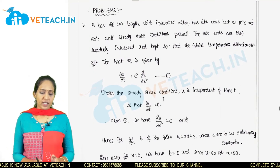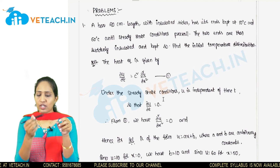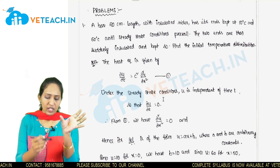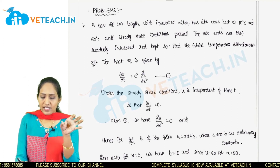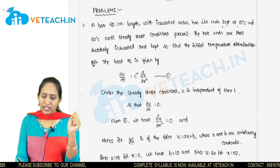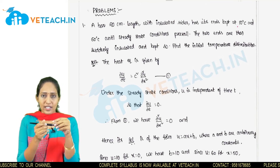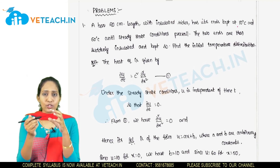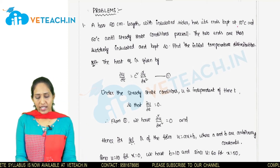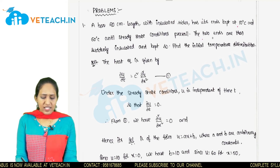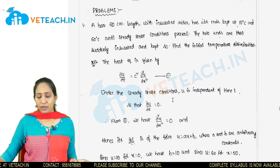Problem: A bar is 20 cm long with insulated sides. Its ends are kept at 10 degrees centigrade and 60 degrees centigrade respectively — two end points with two different temperatures — until steady state conditions prevail. The two ends are then suddenly insulated. Find the initial temperature distribution u(x, 0).